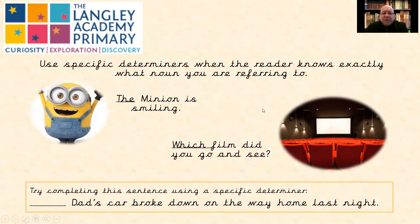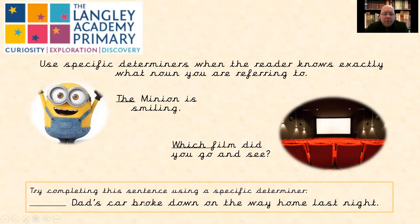So we use specific determiners when the reader knows exactly what noun you're referring to — a particular thing, not just any old book or any old car, but a particular one. So 'the minion is smiling.' Which film did you go and see? Can you complete this sentence using a specific determiner? What word could fit in here? 'Dad's car broke down on the way home last night.' There are a few possibles, but they are going to be possessive determiners. So it could be 'my dad's car broke down,' or 'her dad's car broke down,' or 'their dad's car broke down.'